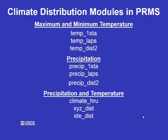There are nine climate distribution module options in PRMS: three for maximum and minimum temperature, three for precipitation, and three that are used to distribute both precipitation and temperature. With the exception of the climate_HRU module, all of these modules distribute climate station data. If you are not using climate_HRU, then you will need a station data file that contains daily precipitation and maximum and minimum temperature.